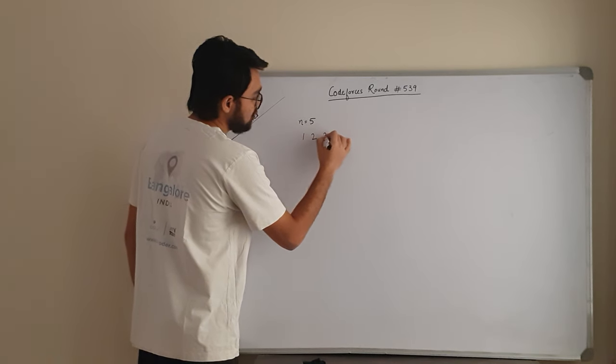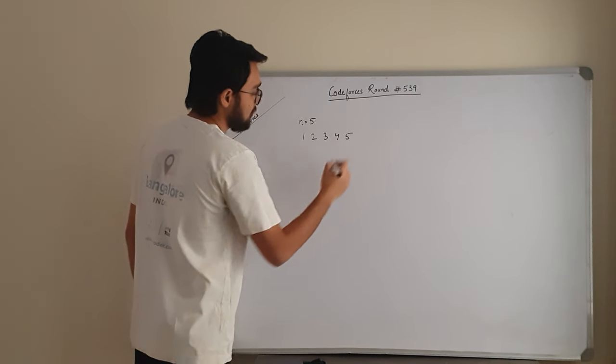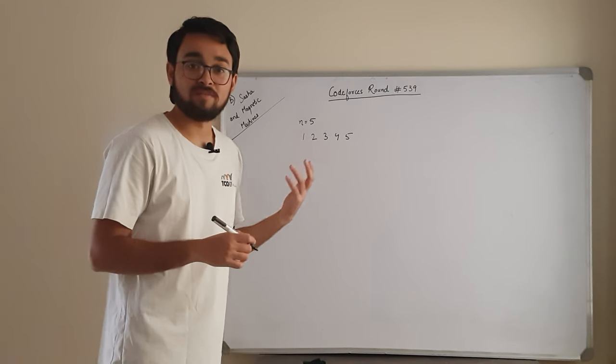Say the elements are 1, 2, 3, 4, 5. So this is the array that we are given.